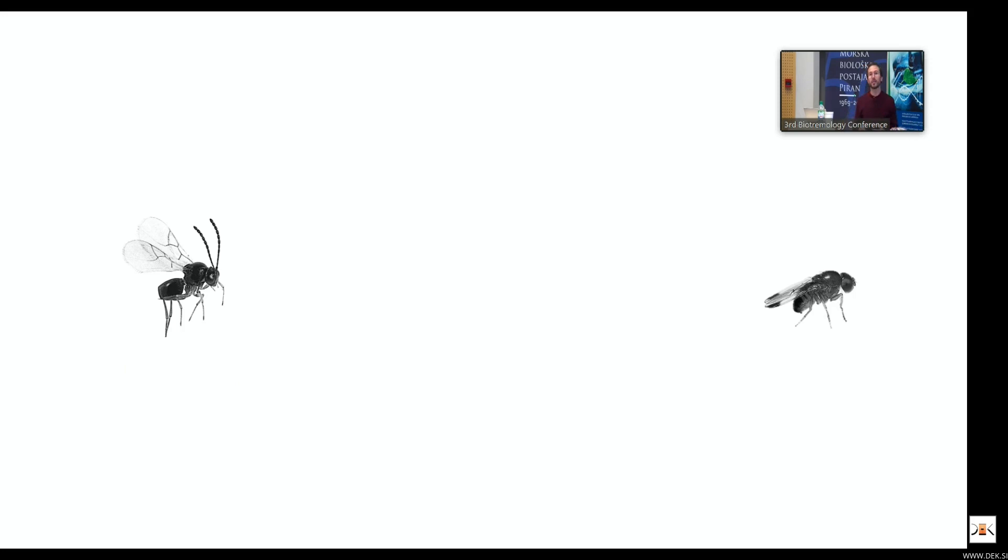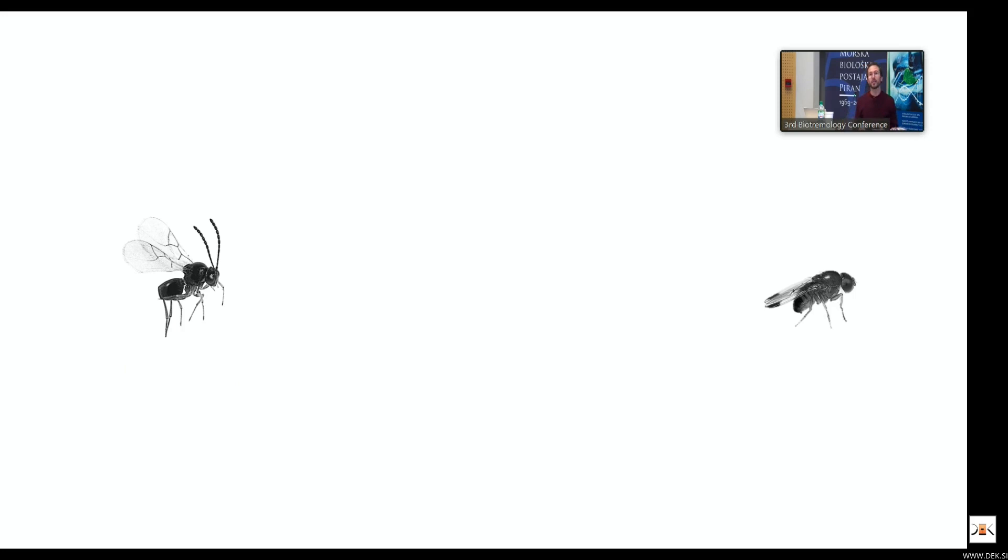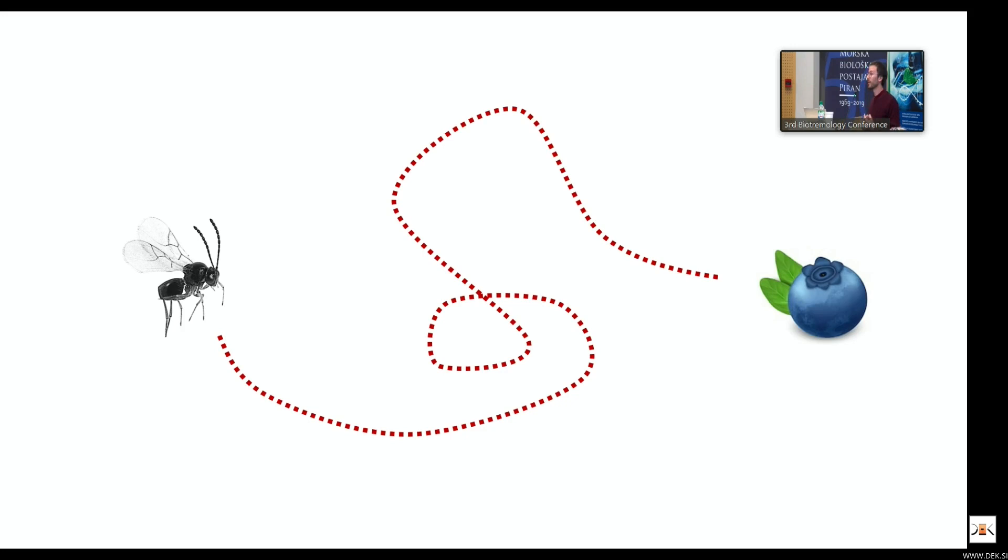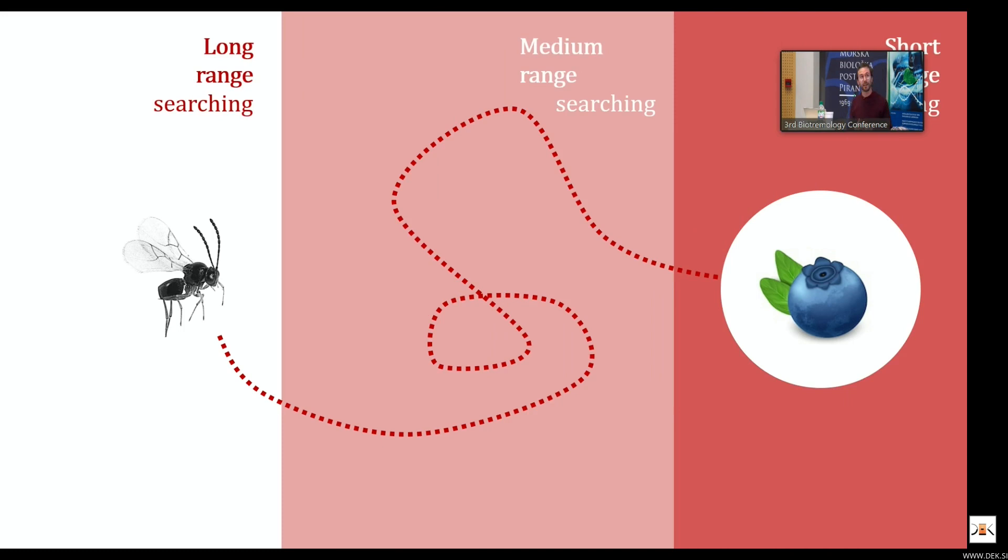What we wanted to identify, which very little was known, was how they actually interact and especially how Ganaspis brasiliensis is able to identify Drosophila suzuki. Especially because in this system Drosophila suzuki larvae are within the fresh fruit. So how is this interaction happening, especially at different stages? At medium range we know that mostly these interactions are mediated by chemical stimuli. There are some examples done for different related species, and we have ongoing research to identify these chemical stimuli.